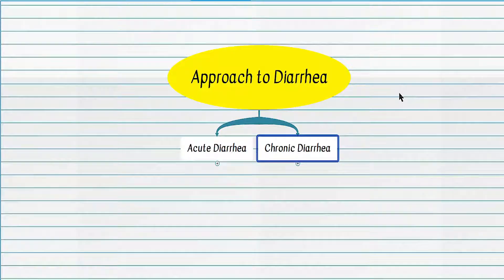Moving to chronic diarrhea: for a patient with diarrhea lasting more than a month, the first two decision point questions are — first, whether the patient has any alarm symptoms indicating an organic (non-functional) cause of chronic diarrhea; and second, if organic causes are present, to what category of organic chronic diarrhea the patient belongs.